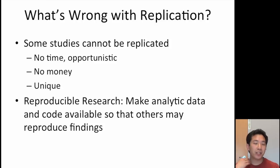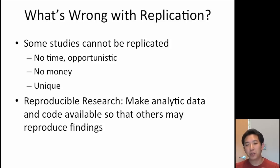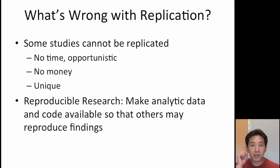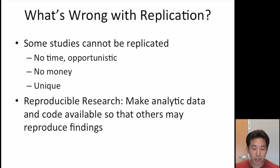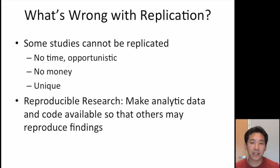Sometimes it's difficult to replicate a study because if the original study took 20 years to do, it's difficult to wait around another 20 years for replication. Some studies are just plain unique — if you're looking at a unique situation in time or a unique population, you can't readily replicate that situation. So there are a lot of good reasons why you can't replicate a study.